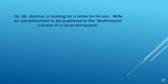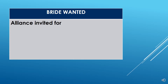So how do we start writing? First, we have a box frame. On the headline, it is written 'Bride Wanted' in capital letters. The heading will be 'Bride Wanted.' Below that, the next line is written 'Alliance Invited For.' Marriage invitation for marriage is called Alliance Invited For.